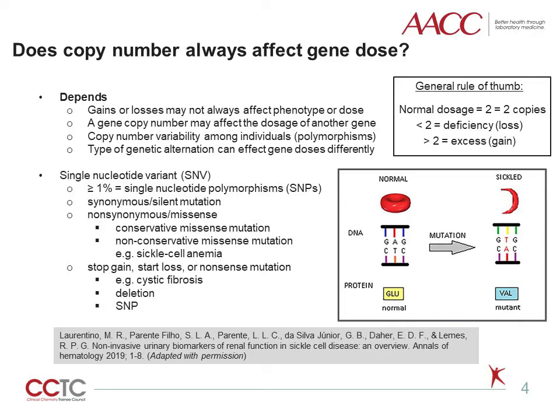Sickle cell anemia is an example of a gene dosage effect resulting from two abnormal copies of the beta-globin gene. Because inheriting two abnormal copies results in fewer or no copies of the normal beta-globin gene.